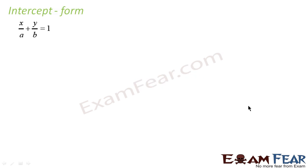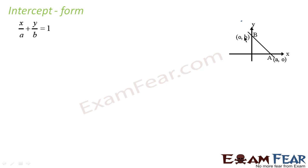In intercept form, we write the equation as x/a + y/b = 1, where a and b are the x and y intercepts. If you see this graph, the line cuts the x-axis at point (a, 0) and the y-axis at point (0, b). So a is the x-intercept and b is the y-intercept.